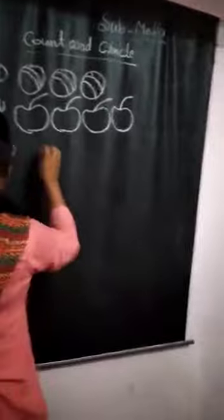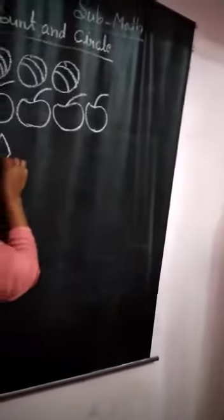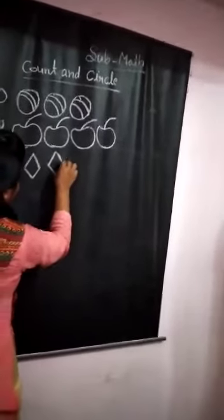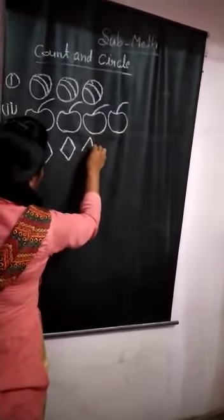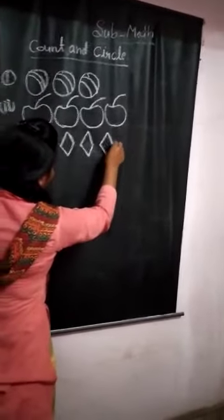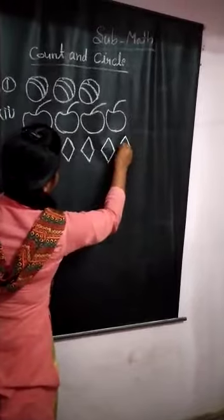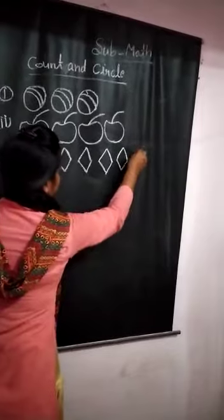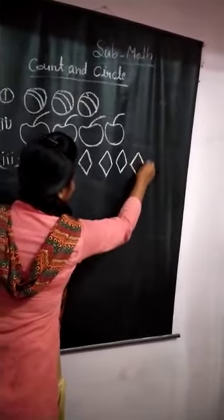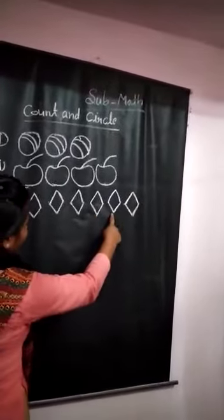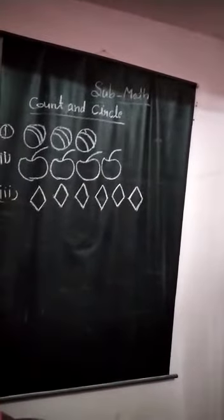Third number. Diamond. One, two, three, four, five, six.